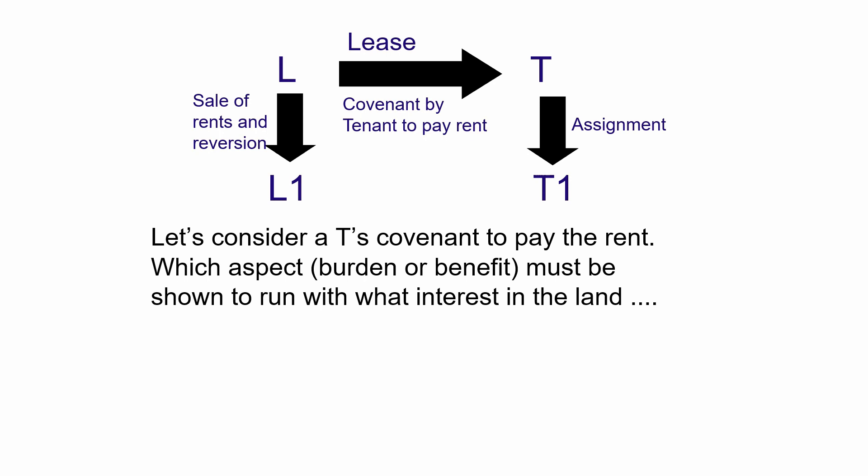Consider the tenant's covenant to pay the rent. In the first scenario, neither party has transferred their interests and L sues T — this is simply a contract enforcement case; no running of covenants is needed. In the second scenario, T makes an assignment to T1 and the landlord sues T1 — the issue is whether the burden of the covenant runs with the tenant's leasehold estate to T1.